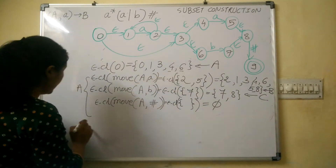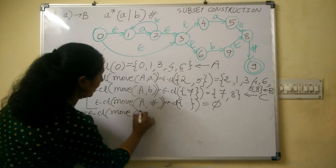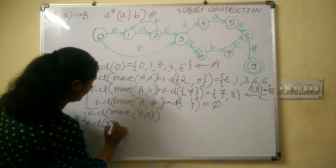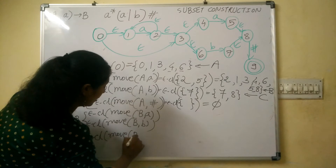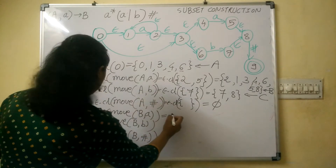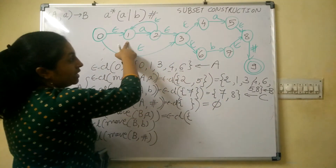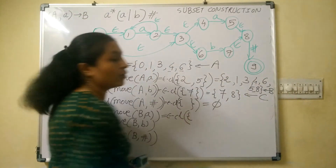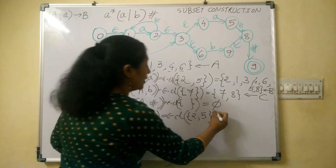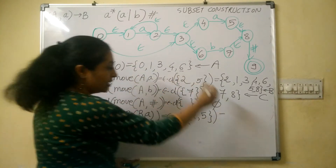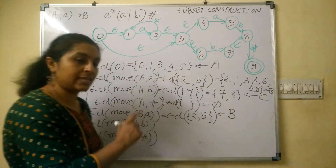After completing state A, select state B and repeat. Find move(B, a): state B contains {1,2,3,4,5,6,8}. From state 1 we have a transition on 'a' to 2, and from state 4 we have a transition on 'a' to 5. This gives {2, 5}, and null closure({2,5}) is the same as before — that is state B. So from B on input symbol 'a' it remains in state B.